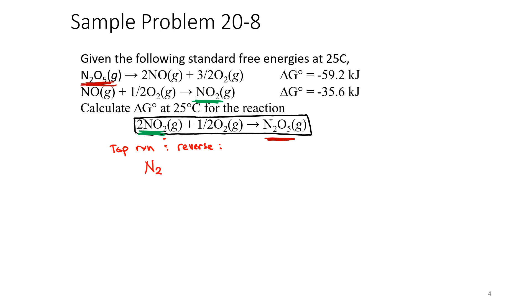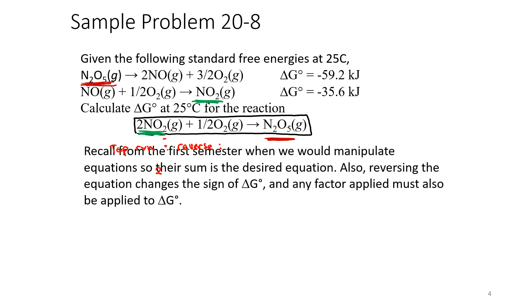So I have two NOs plus three halves oxygens forming N₂O₅. All I did was reverse that reaction. So I'm going to take the delta G that it was, the negative 59.2, and I'm going to make it positive 59.2 kilojoules. That's one of them.